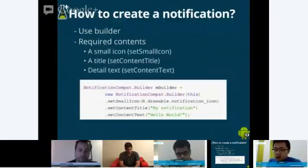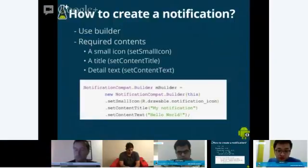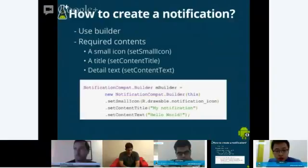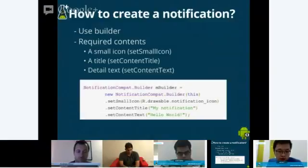Let's talk about how to create a simple notification. We added a builder later in our API to build notifications. We also introduced something called NotificationCompat in the support library, which makes your notification implementation backward compatible. Not all notification features will be available on devices with older Android versions, but it helps make sure your code won't break on old Android OS. There are a few required contents for a notification: a small icon, a title, and the detailed text.